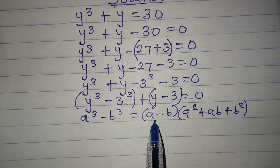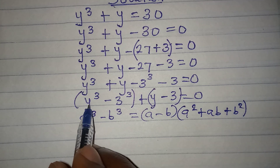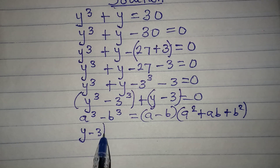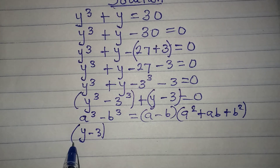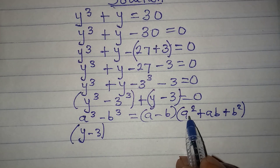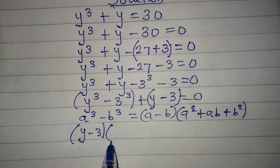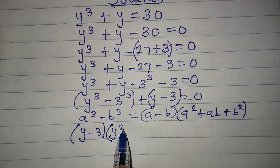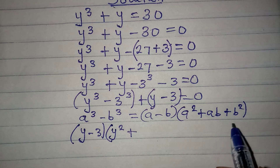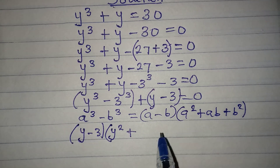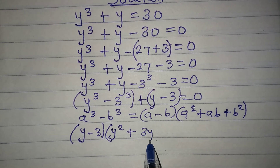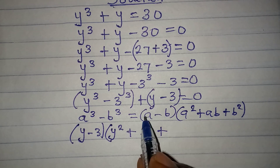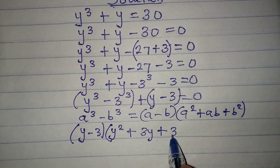In place of a minus b I have y minus 3, then a squared becomes y squared, plus ab becomes y times 3 which is 3y, then b squared will be 3 squared.